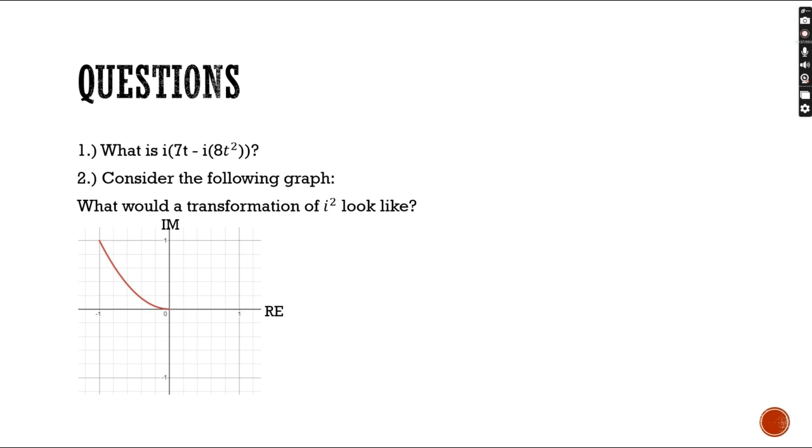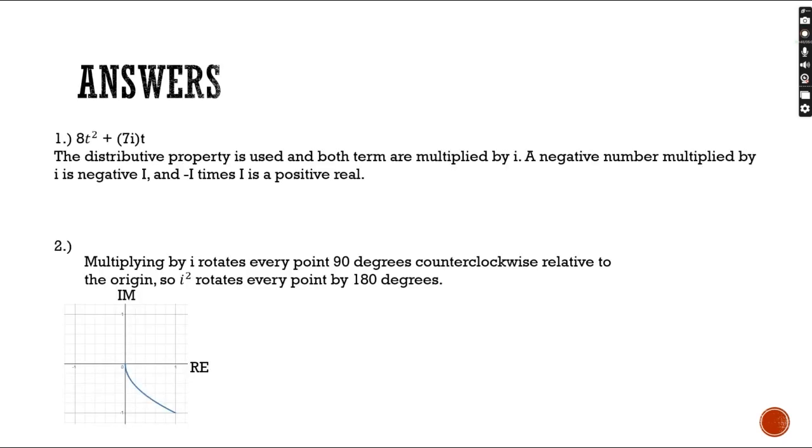Our second question is, consider the following graph. What would a transformation of i squared look like? The answer to this question is the same graph, but rotated 180 degrees. This is because, previously, we established that multiplying by i rotates every point 90 degrees counterclockwise relative to the origin. So i squared would be a rotation of 180 degrees.